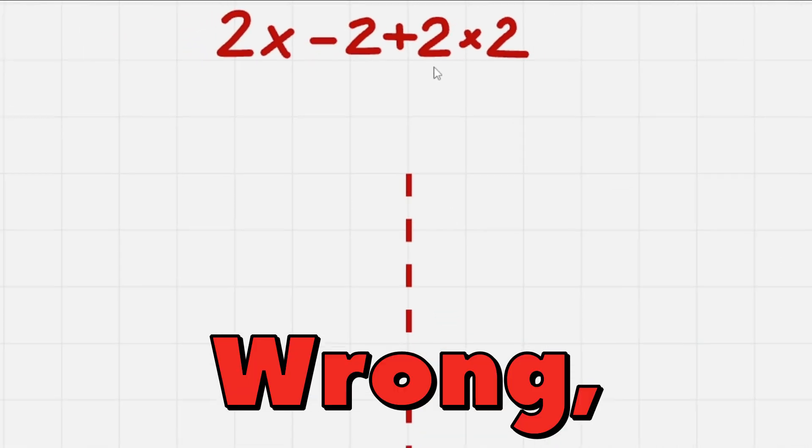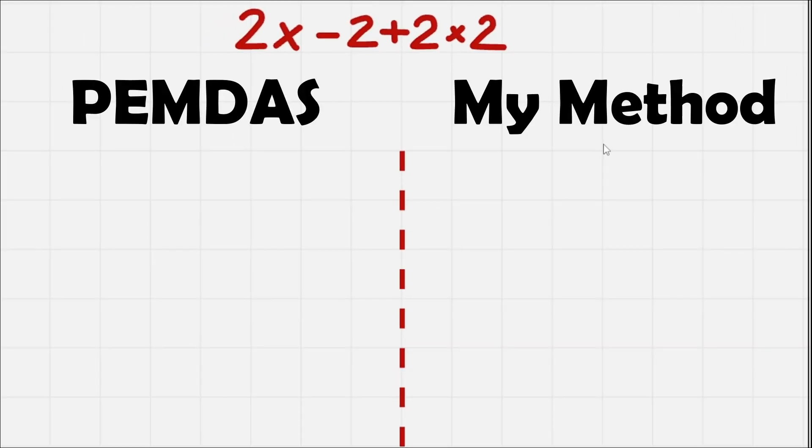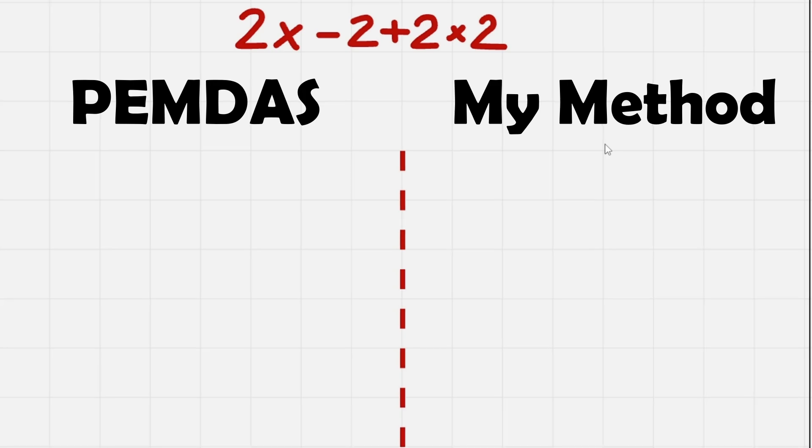PEMDAS will get this equation wrong while my method will give a 100% success each time. So watch to the end to find out what it is.